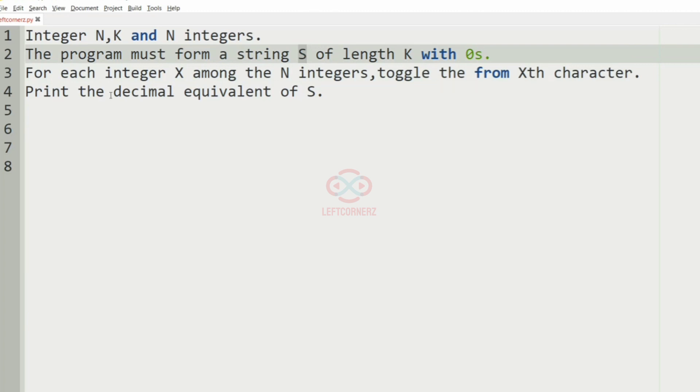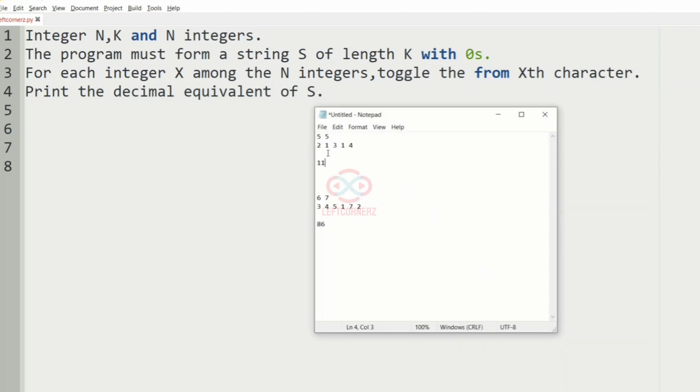And after toggling, the program must print the decimal equivalent of S. So we'll take our first test case.